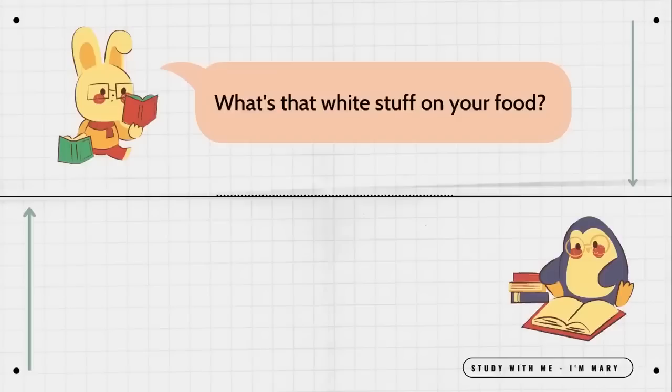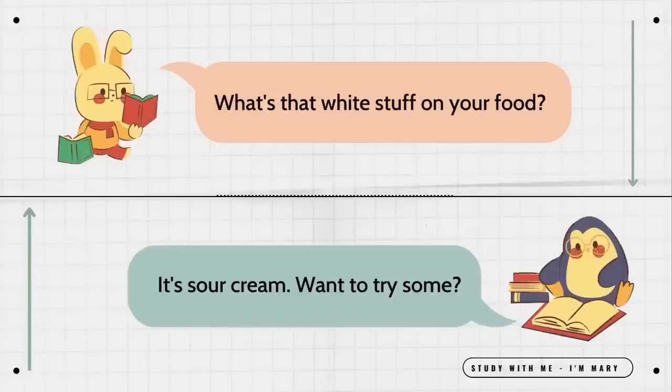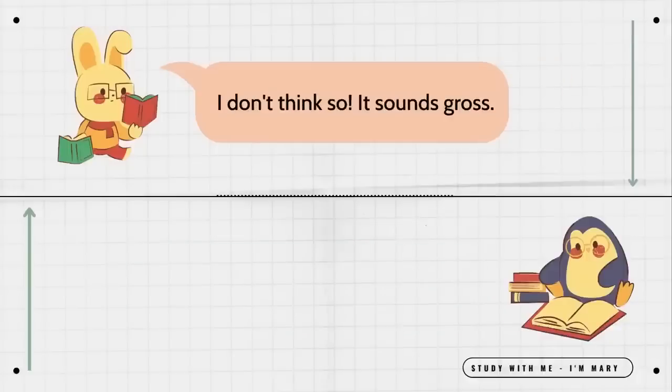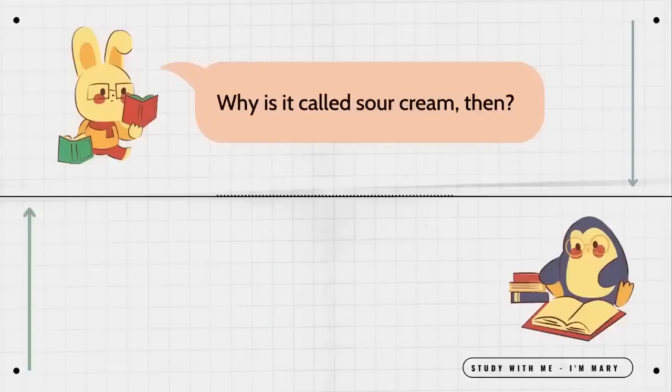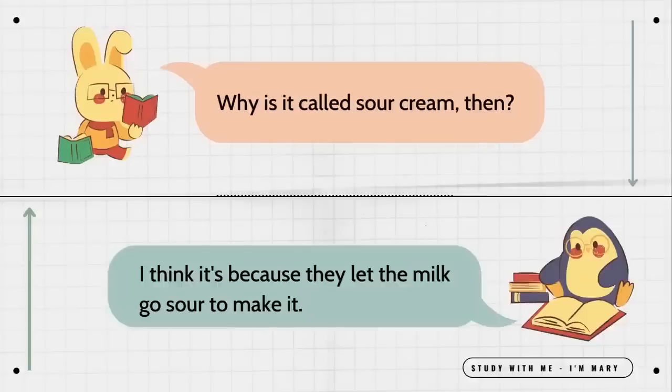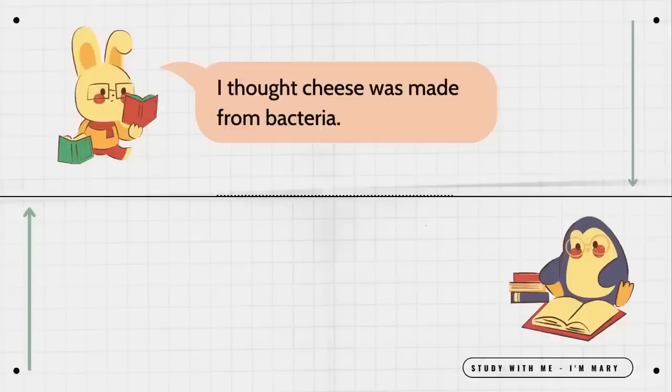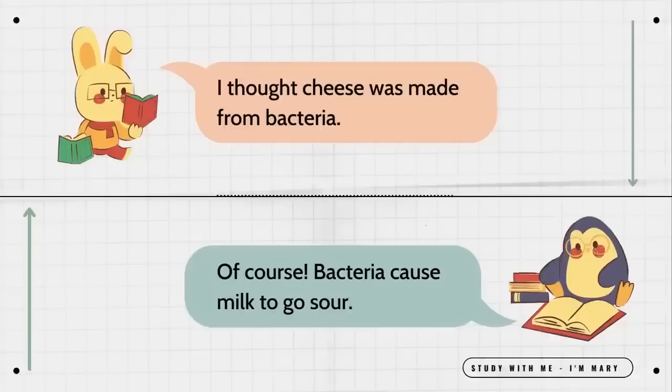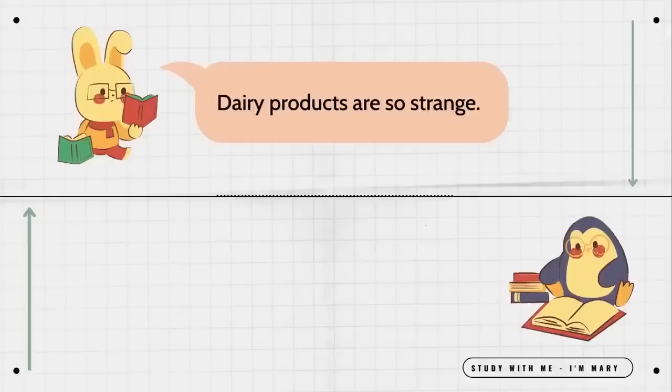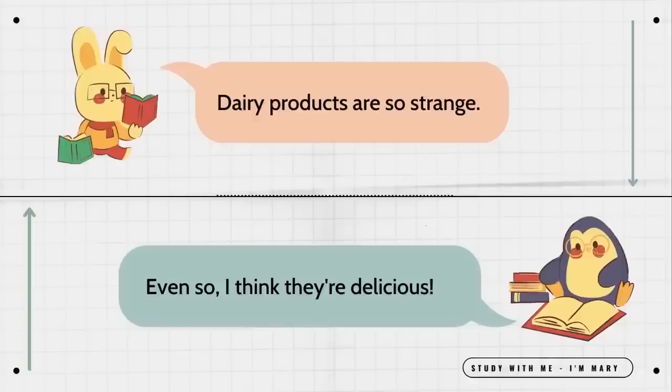What's that white stuff on your food? It's sour cream. Want to try some? I don't think so. It sounds gross. It's not really sour. Why is it called sour cream then? I think it's because they let the milk go sour to make it. You're eating sour milk? Yuck. Cheese is made in a similar way. I thought cheese was made from bacteria. Of course bacteria cause milk to go sour. Dairy products are so strange. Even so, I think they're delicious. That's a good food.